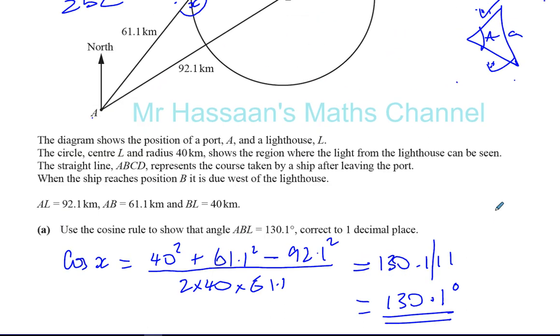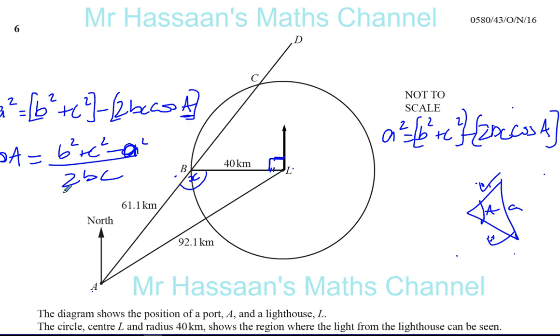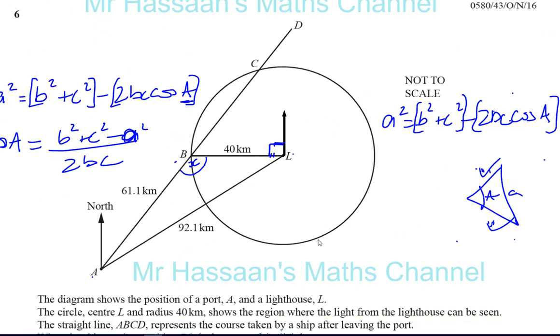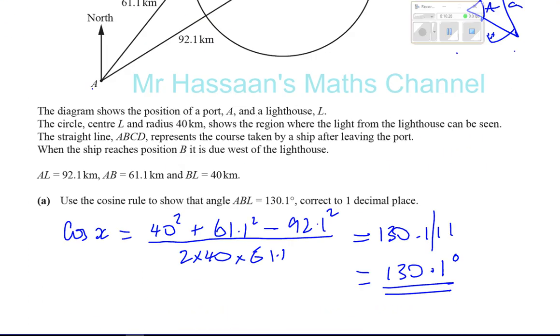So it's as simple as that. That's four marks for that question. You have to know how to use a cosine rule, how to apply it to a particular situation. Now that's part A done. And I'll do part B on a separate video.